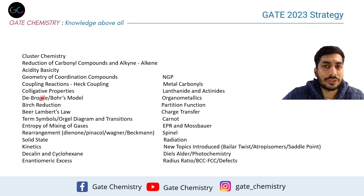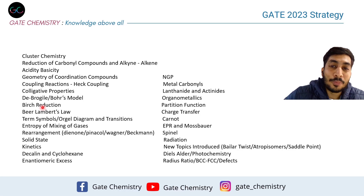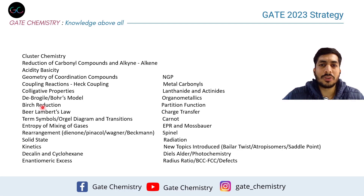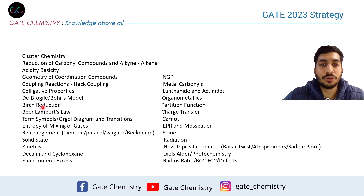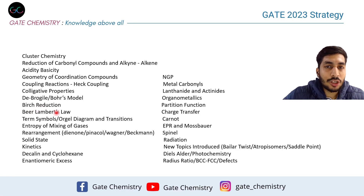Birch reduction is a very popular name reaction seen frequently in GATE and NET. I haven't seen a specific question on it recently, but it appears very often in examinations, so do not skip it. Then Beer-Lambert law — you should have a basic understanding of what it is and know the formula.